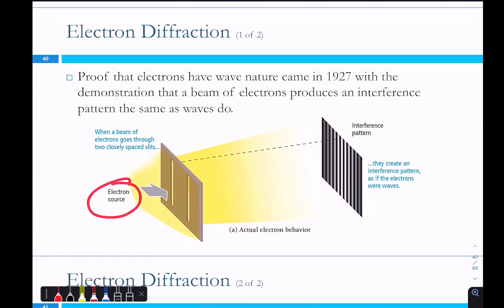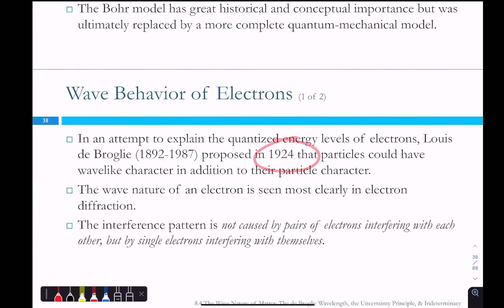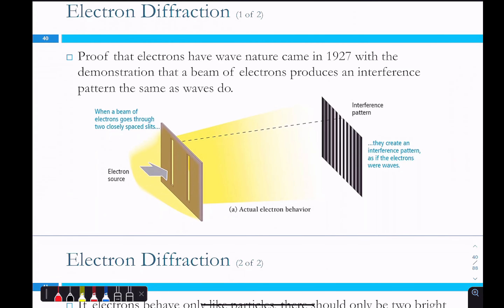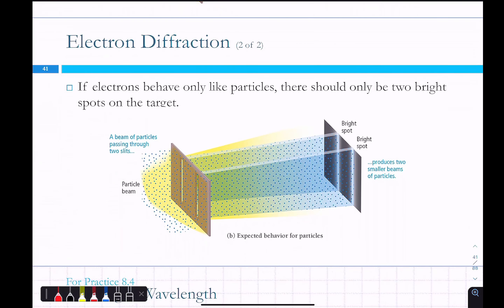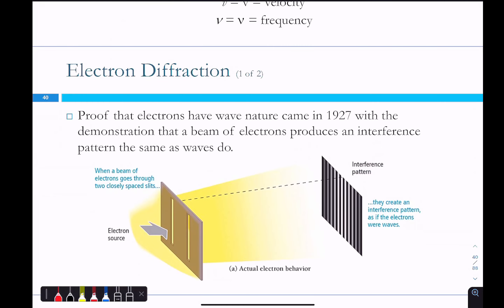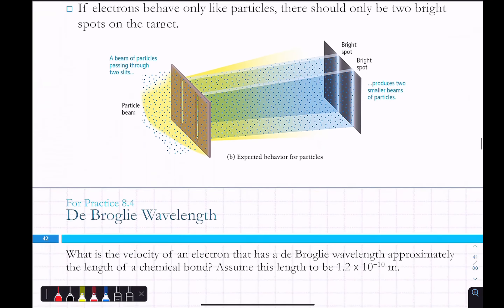This is the diffraction pattern from an electron source — the proof that electrons have wave nature. In 1927, shortly after de Broglie proposed this, someone read his paper and went on to prove it. When an electron beam is passed through two slits, you end up with an interference pattern, which is proof of wave-like character. Whereas if electrons behaved only like particles, there should be only two bright spots. But of course that's not what happened — the slides should be reversed: this is what we expected to see, and this is what was actually seen, proving de Broglie correct.